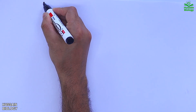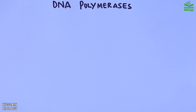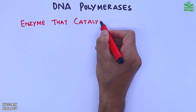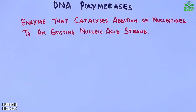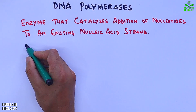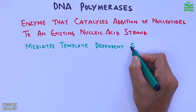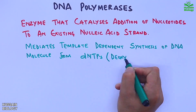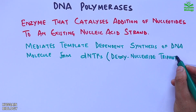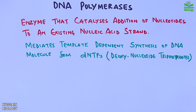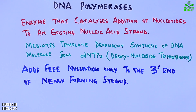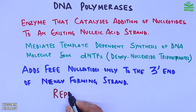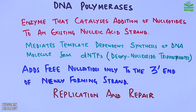In this video we will be discussing about the DNA polymerases. These are the enzymes that catalyze the addition of nucleotides to an existing nucleic acid strand. The primary function of DNA polymerase is to mediate the template-dependent synthesis of a DNA molecule from dNTPs. During the process of synthesis, it adds nucleotides only to the 3' end of the newly forming strand. In a nutshell, DNA polymerase drives DNA replication and repair within the cell.